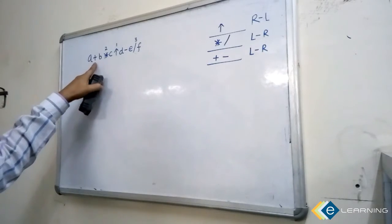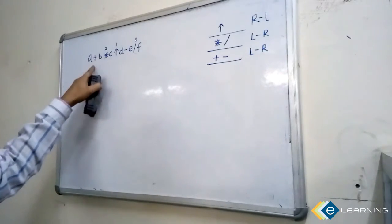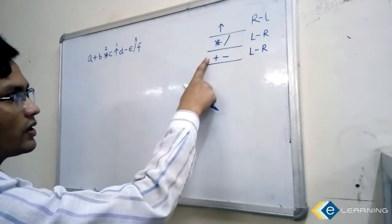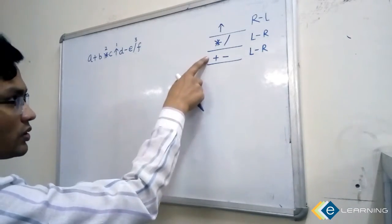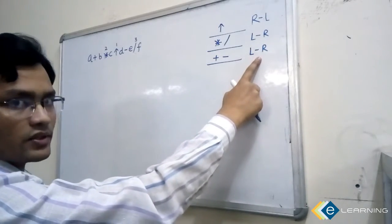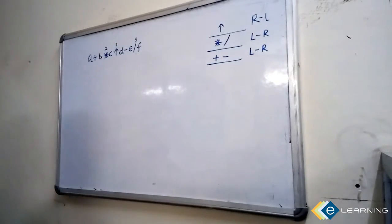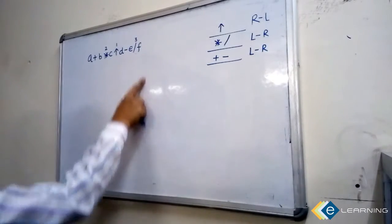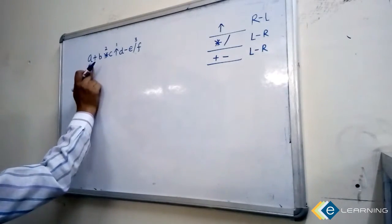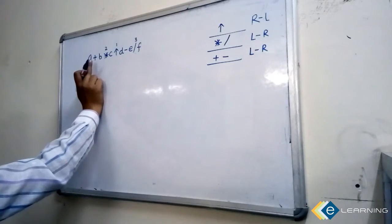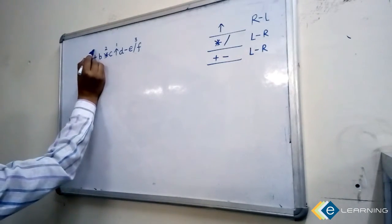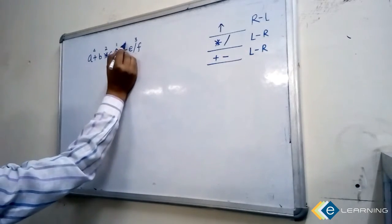Now the remaining operators are plus and minus, which have the same precedence. Associativity says left to right — going left to right, plus is coming first, then minus is coming. So plus gets the fourth position and minus gets the fifth position.